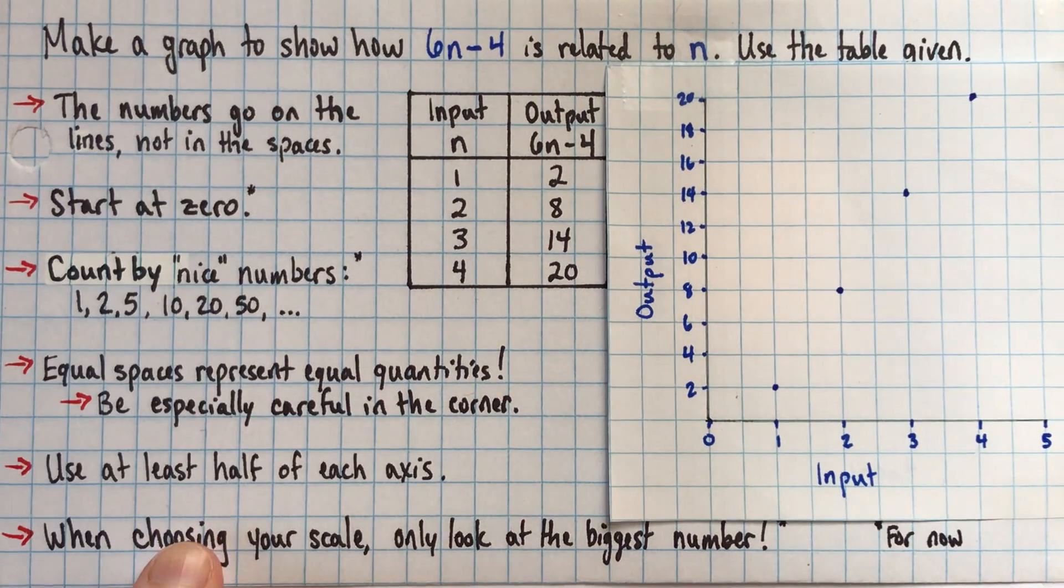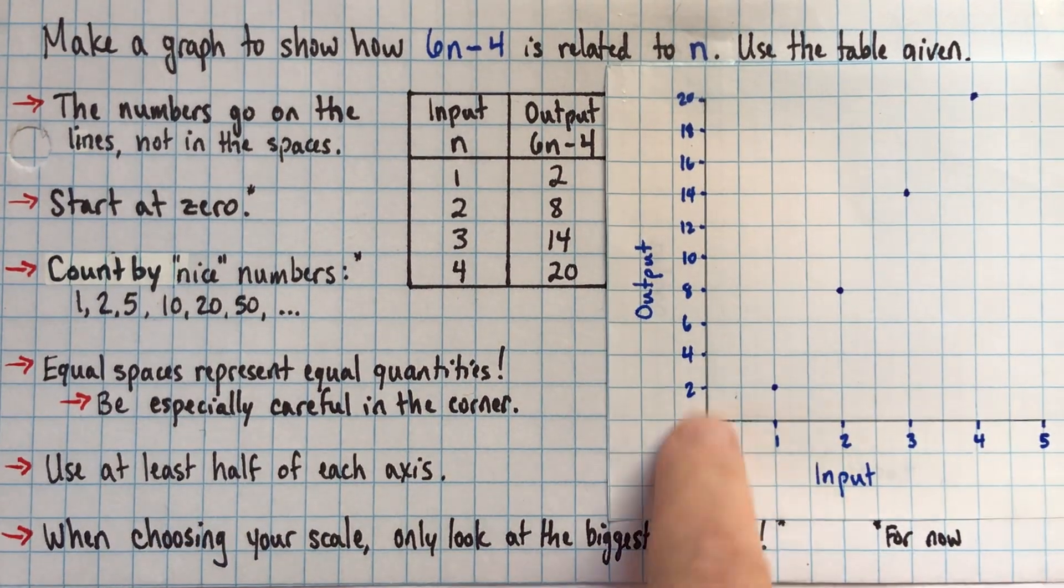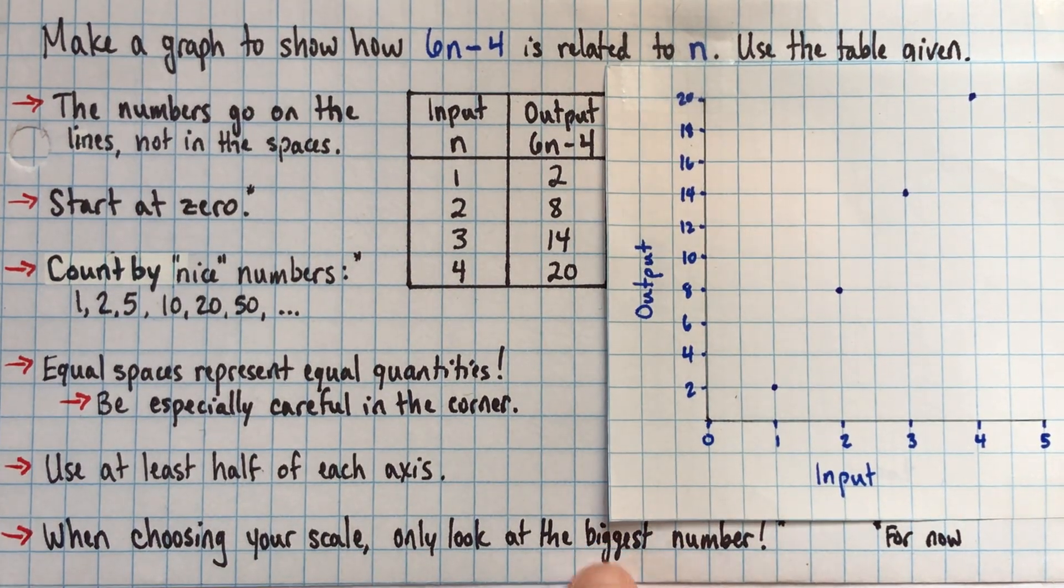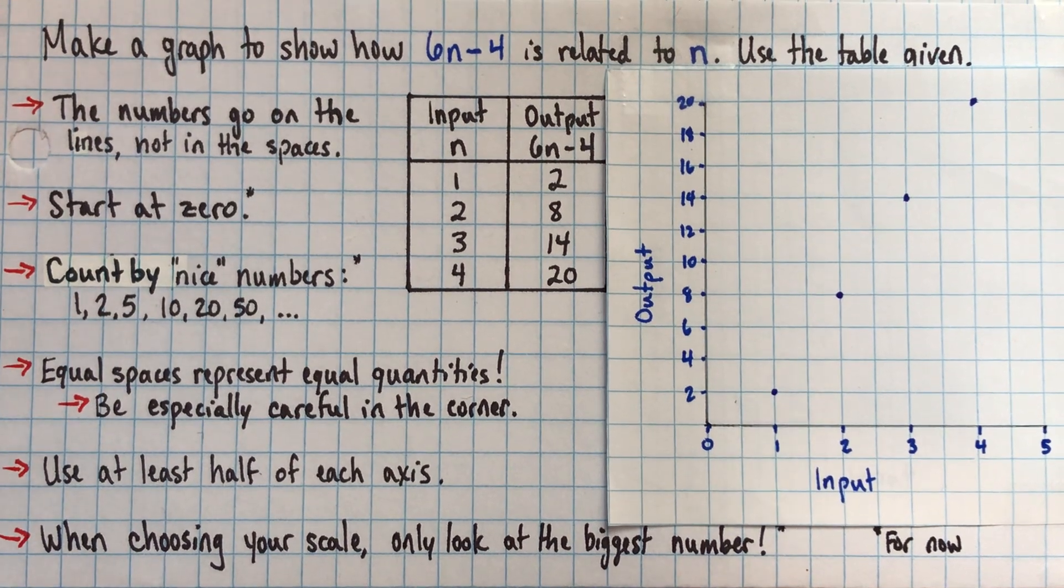So probably copy that list down. And then as you label your axes, you can just go through the list to make sure that you followed all the rules. Good luck making graphs of your linear relations.